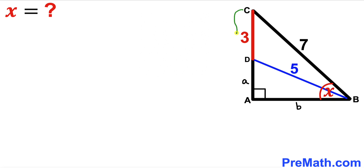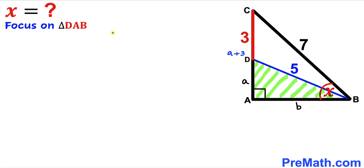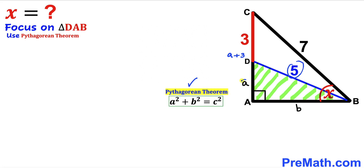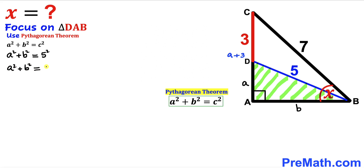Then we can see that this whole side AC is going to be A plus 3. Let's focus on right triangle DAB and we are going to use the Pythagorean theorem on this triangle. Here's our Pythagorean theorem: A squared plus B squared equals C squared. In our case, our hypotenuse is 5 and our other two legs are A and B. So we are going to have A squared plus B squared equals 5 squared, which simplifies to A squared plus B squared equals 25.